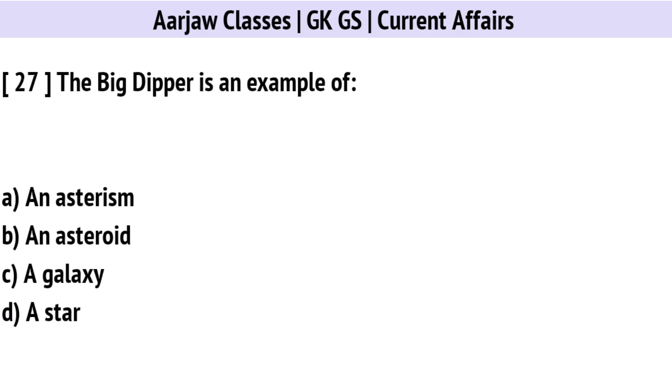The Big Dipper is an example of? Correct option is A: An asterism.